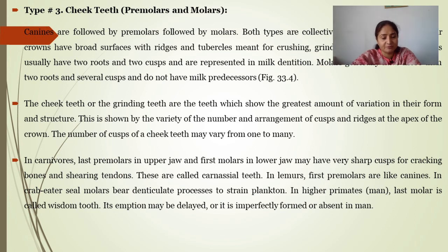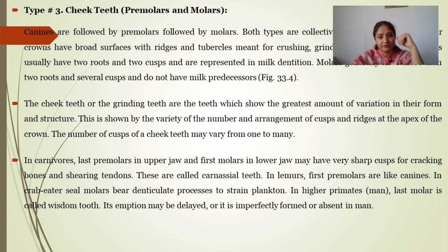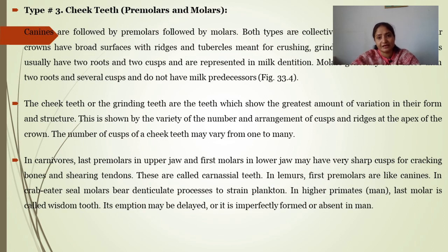In carnivores, the last premolar in the upper jaw and the first molar in the lower jaw may have very sharp cusps for cracking bones and shearing tendons; these are called carnassial teeth. In lemurs, the first premolar is like a canine. In crab-eater seals, molars have denticulated processes for straining plankton. In higher primates, the last molar is called the wisdom tooth, whose eruption may be delayed, imperfectly formed, or absent in humans.